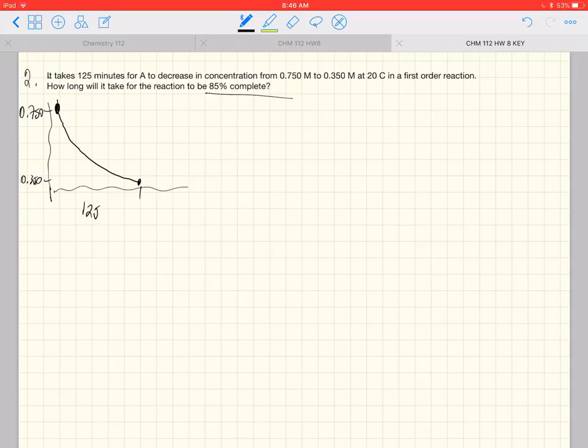The integrated rate law for a first order reaction looks like this. The natural log of the initial amount minus the natural log of the amount at time t is equal to k times t.